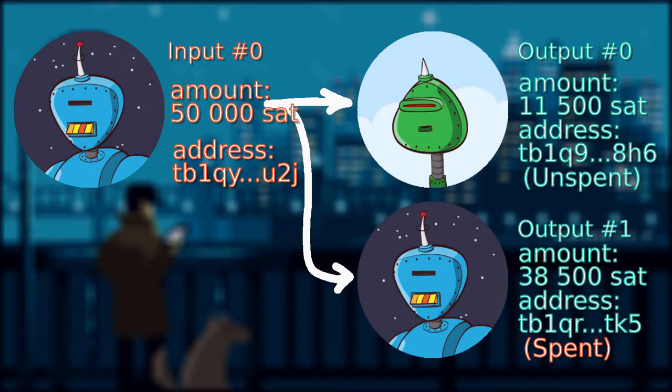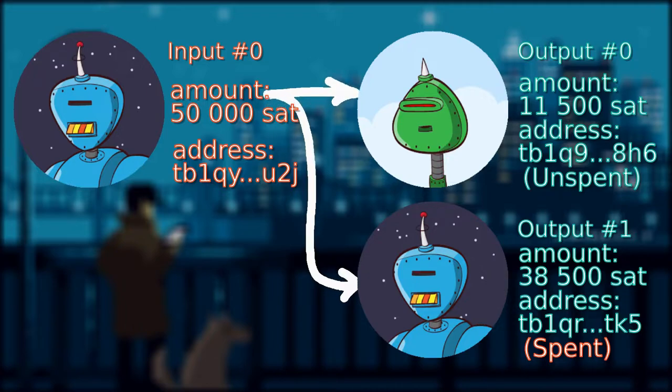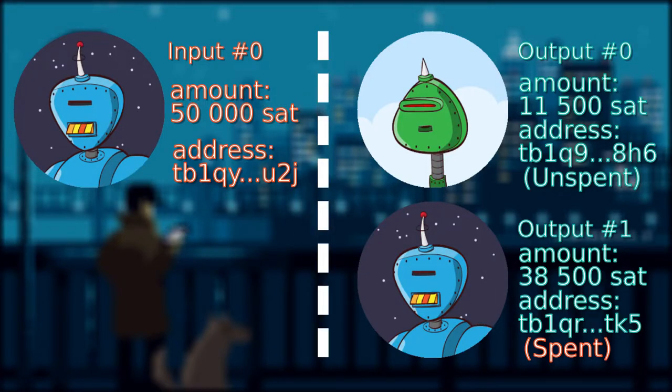Just one more thing, I'll be replacing this arrow notation with this dotted line, since we already understand that the flow of funds is from the input to the output.